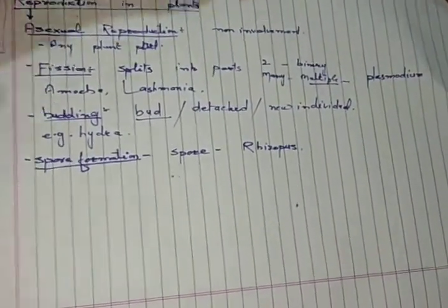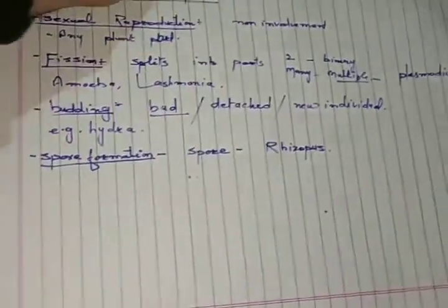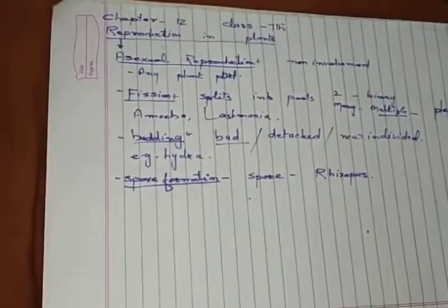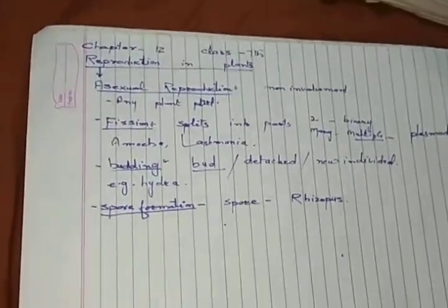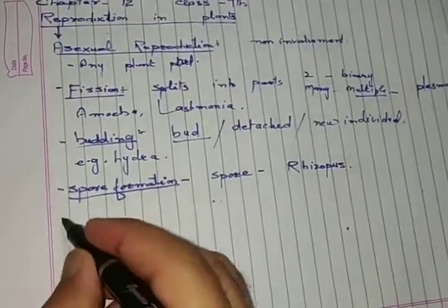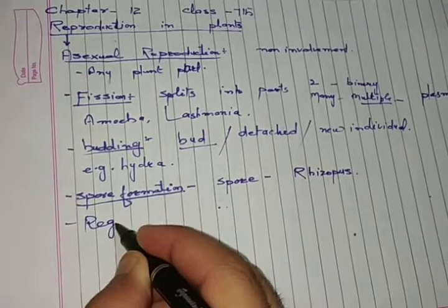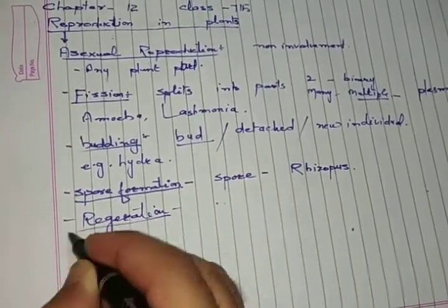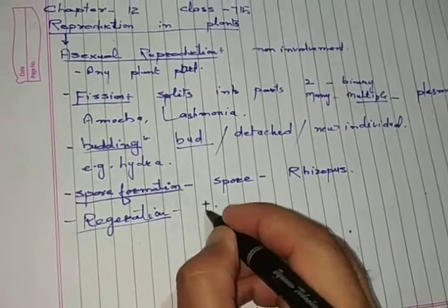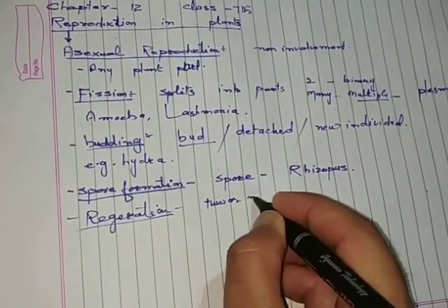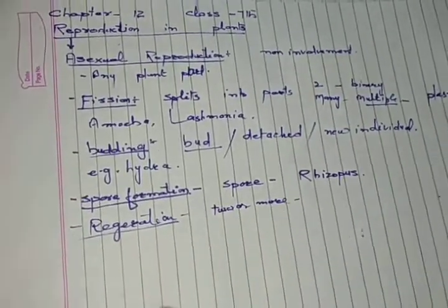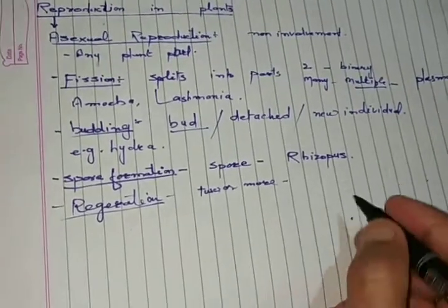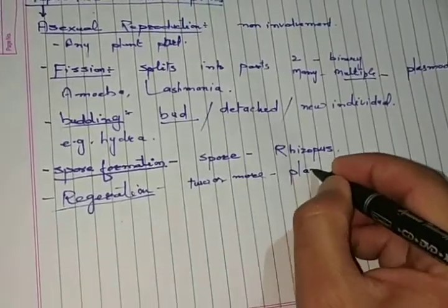There is something else that we will see: regeneration, where we can cut some plant parts into two or three parts. Every part gets developed into a new individual. We can see this in Planaria.